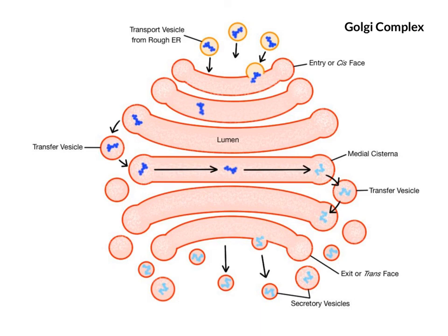There is a lot of secretion of enzymes, hormones, neurotransmitters, mucus, and a variety of other chemicals out of the cell.